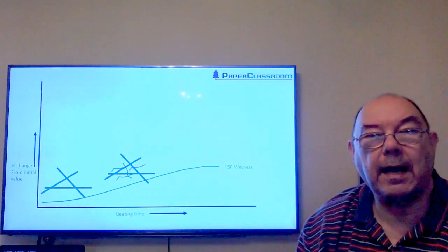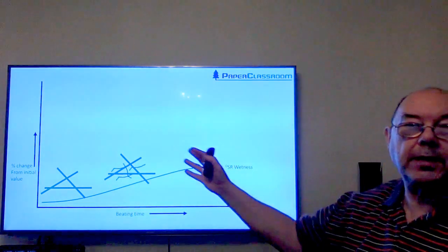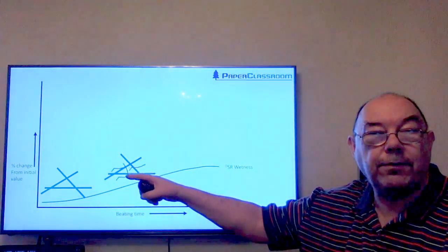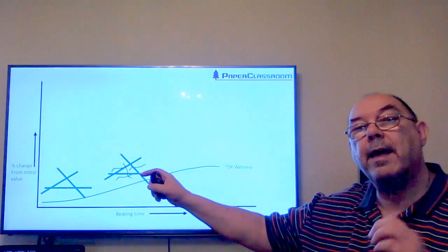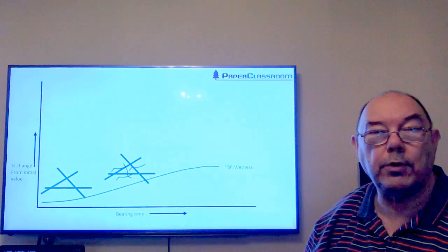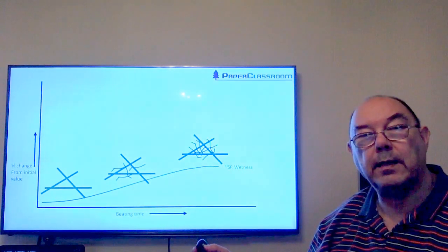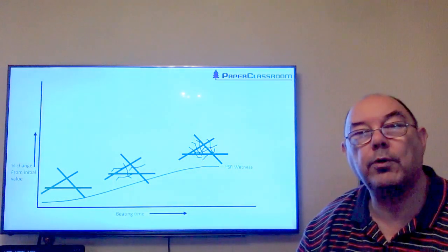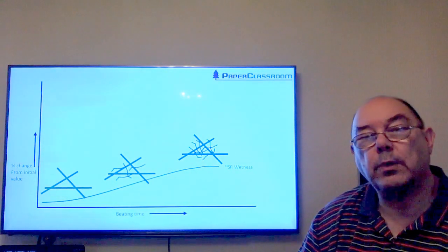As beating time progresses, this is a diagrammatic representation of external fibrillation. We're starting to fill in these holes now, and the drainage rate will reduce. As we continue, we fill in the holes even more, and the drainage rate reduces even more. Other things happen at this point as well—we're also getting fiber shortening.